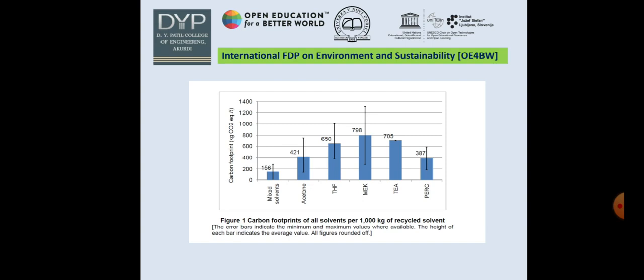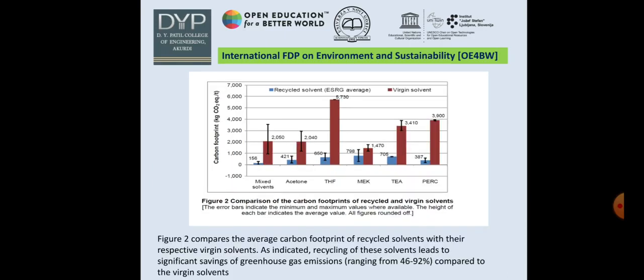Here I have taken examples of some solvents along with their carbon footprinting, calculated per 1000 kg of recycled solvent. We can find that mixed solvent is 156, acetone is 421, and so on. The comparison of carbon footprint of recycled and virgin solvents — that means the original solvent and the recycled one — indicated that recycling of these solvents leads to significant saving of greenhouse gas emissions, ranging from 46 to 92% compared to the virgin solvents.